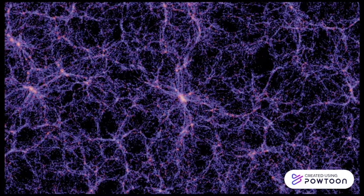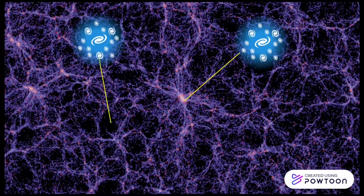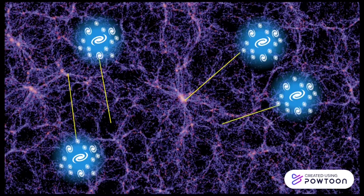Now, for many years, we assumed that the HOD only depends on halo masses. This means, for example, that no matter the place in the universe, a dark matter halo with Mh 10^14 is always going to host n galaxies with a magnitude lower than –17.